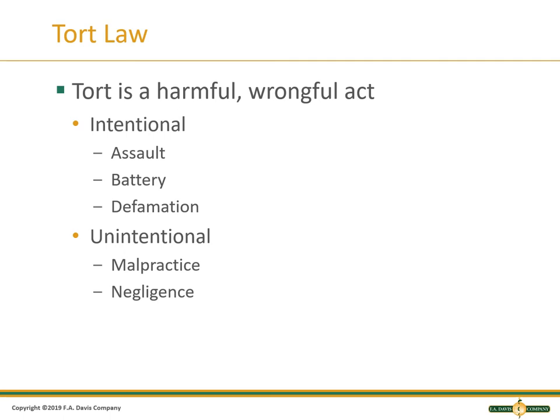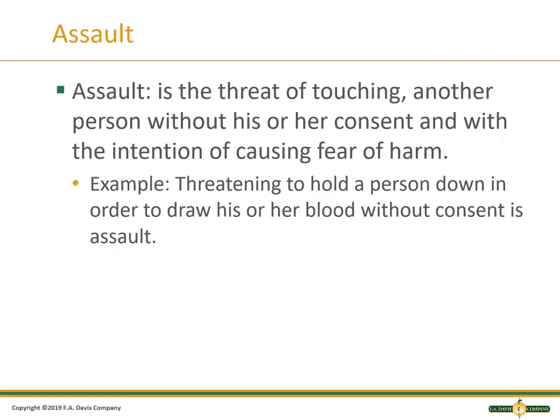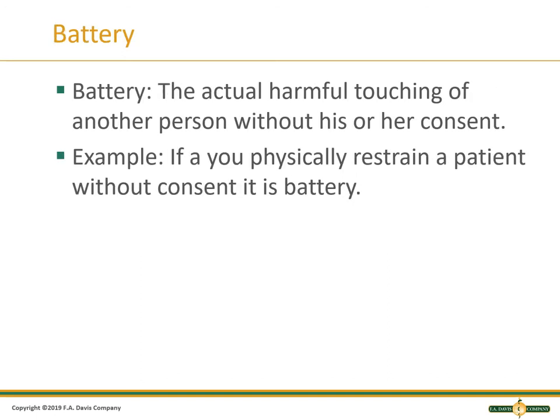Torts are classified as intentional and unintentional. Assault, battery, and defamation are considered intentional torts, while negligence and malpractice are considered unintentional torts. Assault is the threat of touching another person without his or her consent and with the intention of causing fear or harm. For example, if a phlebotomist threatens to hold a person down in order to draw his or her blood without consent, this is assault. Battery is the actual harmful touching of another person without his or her consent. An example would be if a phlebotomist physically restrained a patient without consent — they would be committing a battery.